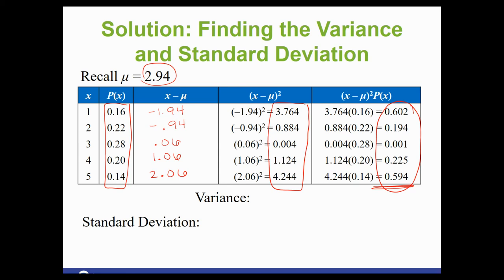When you do add them up, you get 1.6164. So that is your variance. And if you take the square root of that number, then you get 1.2714. This is your standard deviation.